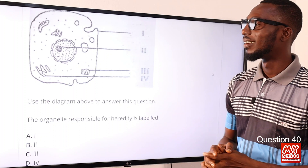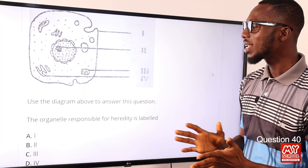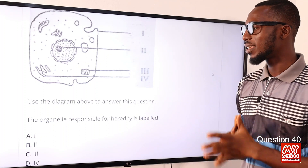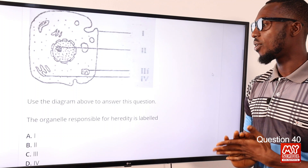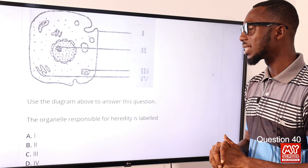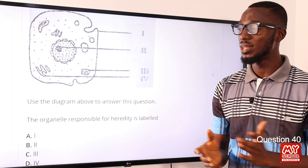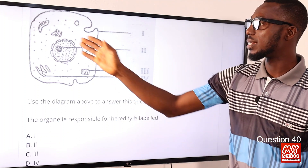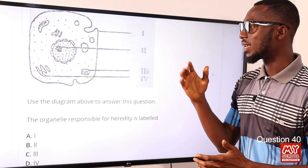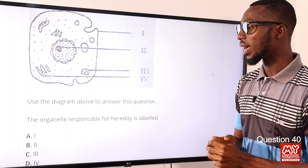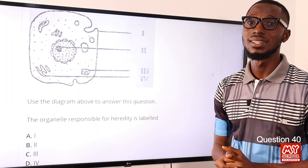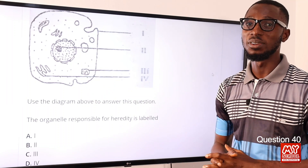Question 40. Use the diagram above to answer this question. The organelle responsible for heredity is first and foremost the nucleus. The closest option to this is option B, which we identify as the nucleus.